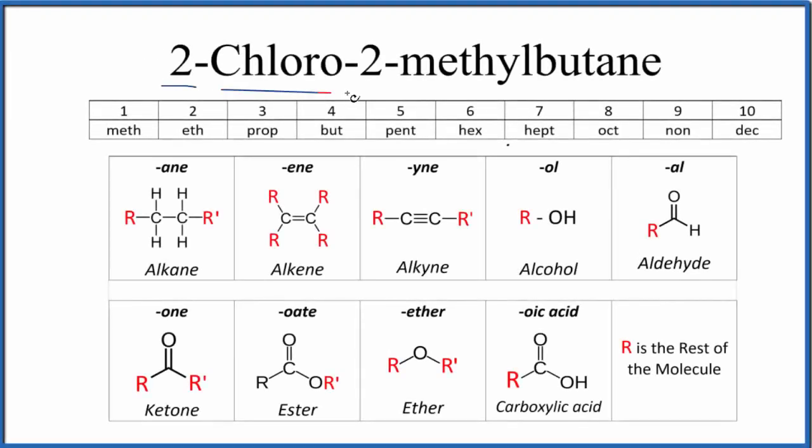Let's write the structure for 2-chloro-2-methylbutane. This is also called tert-amyl chloride. This is the IUPAC name here though, so we're going to go with this in this video.